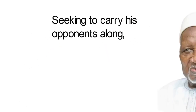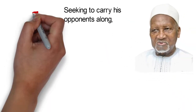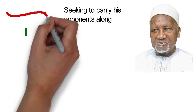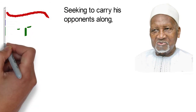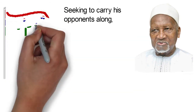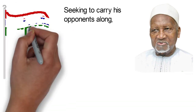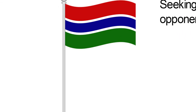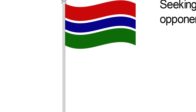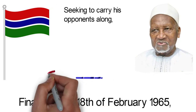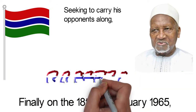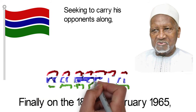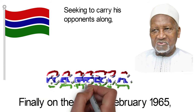Seeking to carry his opponents along after the 1962 election, Jawara went into a coalition government with PSNJ of the United Party to form the Gambia's first independent government. Finally, on the 18th of February 1965, Gambia became an independent nation and was admitted into the Commonwealth. The population of the Gambia was just about 315,000 as of 1963.